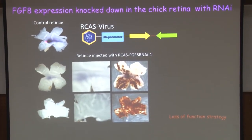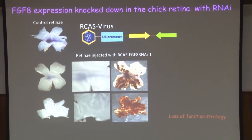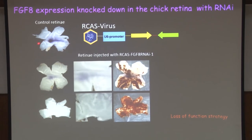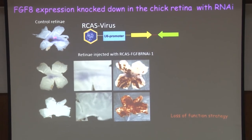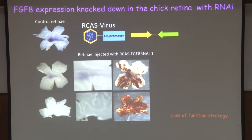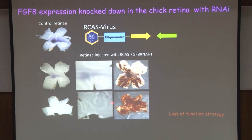This particular gene is expressed in the retina in the central part — this is the normal expression pattern. If you infect with the virus expressing the RNAi construct, you lose the expression of the gene — see how light it has become — and this correlates with how much viral infection has actually taken place.